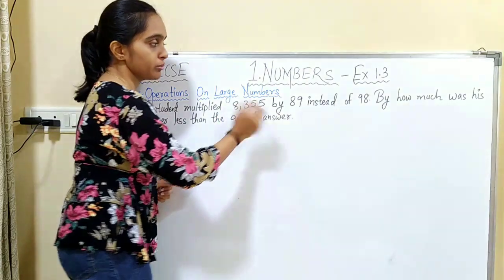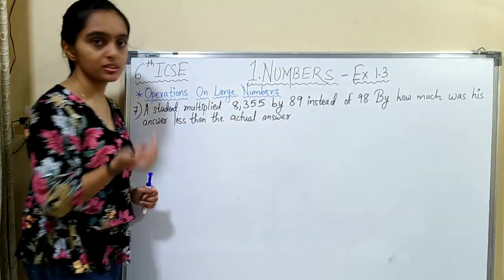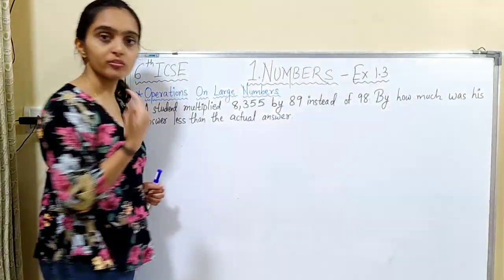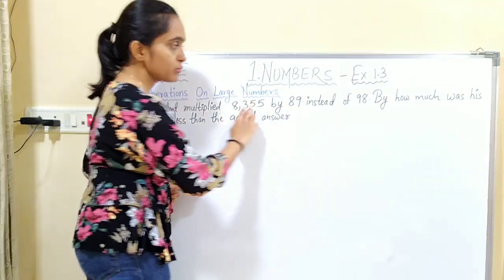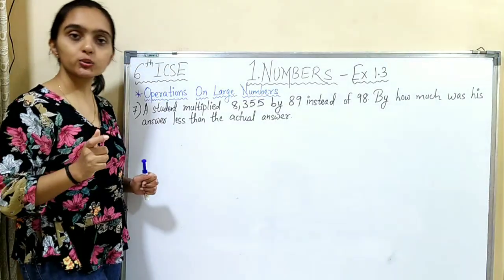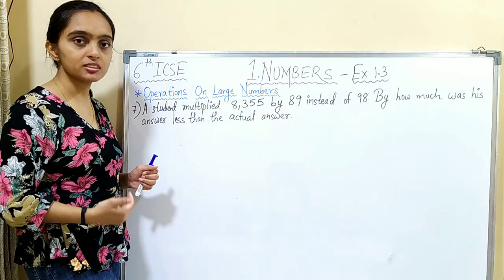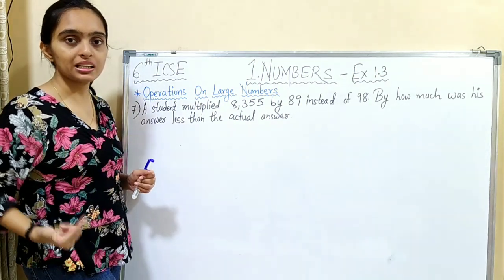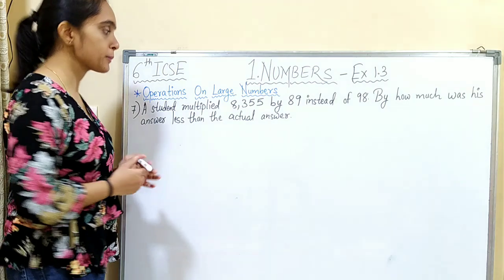We will multiply 8,355 by 98 to get the correct answer, and also multiply 8,355 by 89 to get what the student calculated. Then we will subtract both answers to find how much less the student calculated.